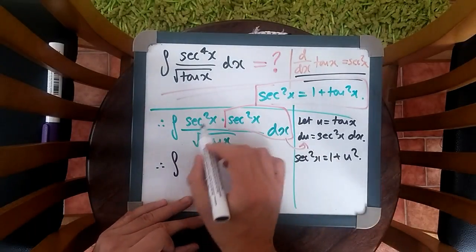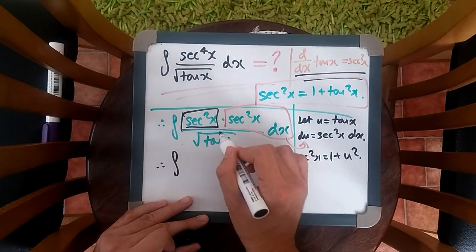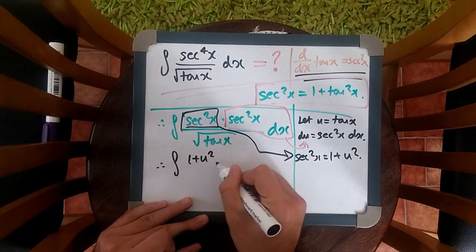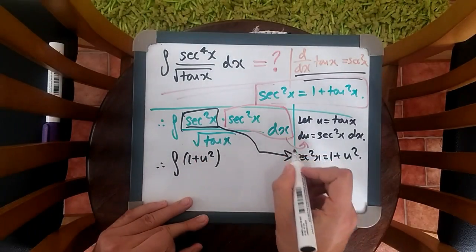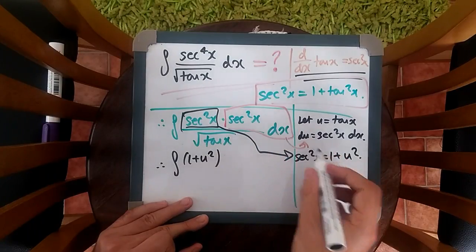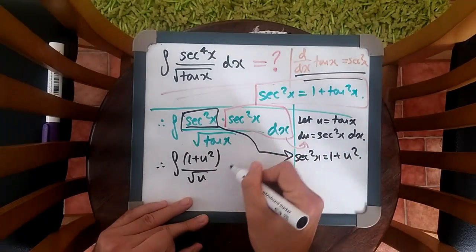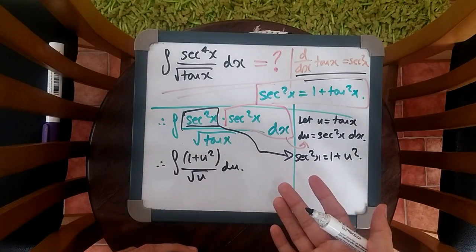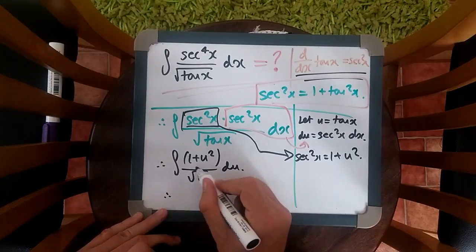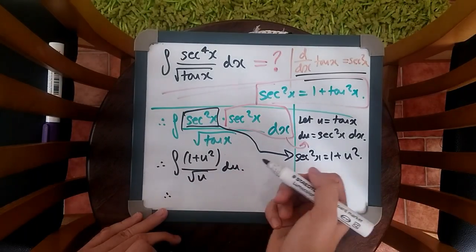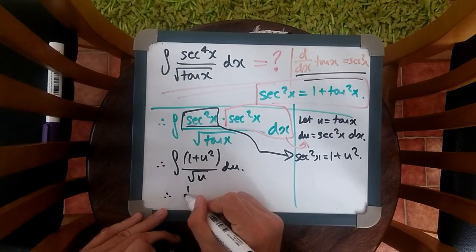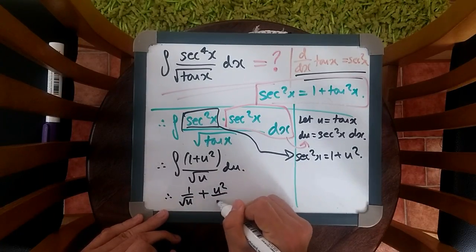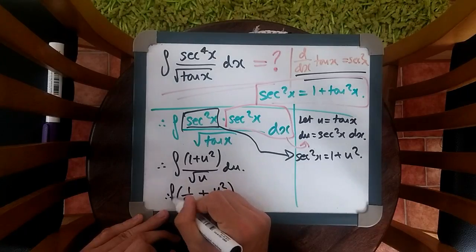Now we just chuck the whole thing in. So this sec squared belongs, of course, over here. So we're going to have one plus u squared times du over root u. And that's it. And now to solve this one, you can just split the fractions up. So you're going to have one over root u plus u squared over root u. One over root u plus u squared over root u. And now we just integrate this.